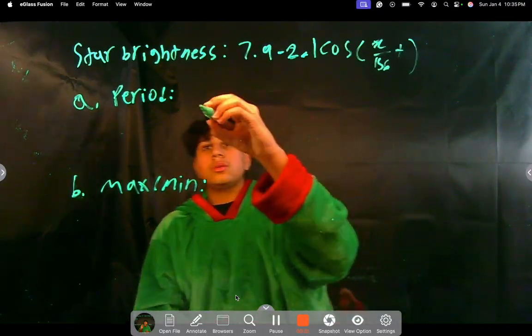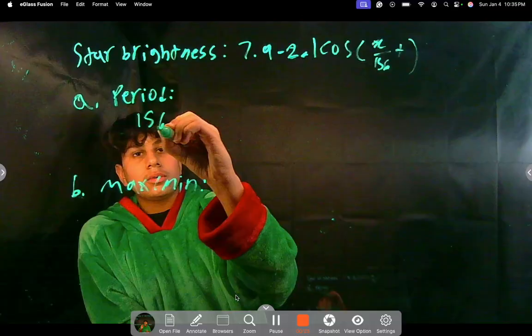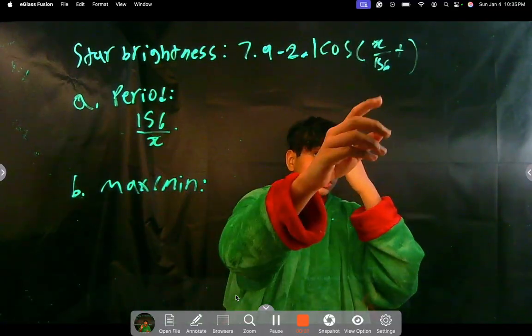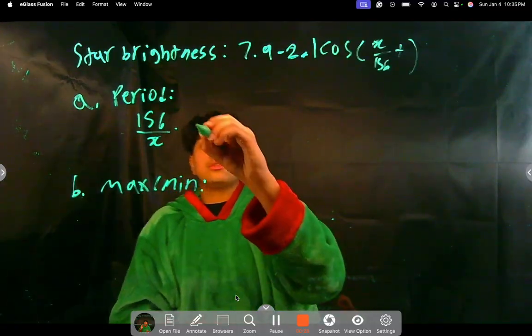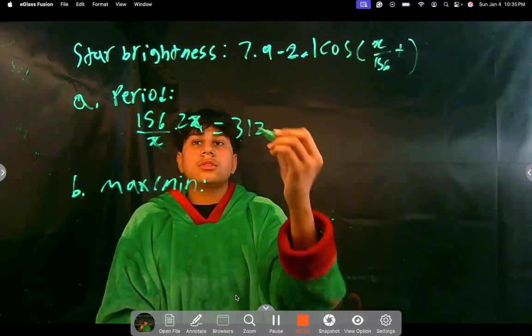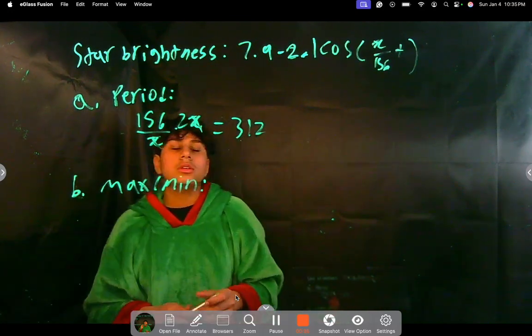We're asked to find the period. So what do we do first? First, we multiply what the change is on the period times the original period, which is 2 pi. Pi over 156 is k, so you get 312. So that's already one of our parts. The period is 312.